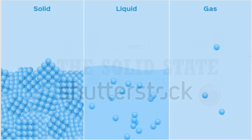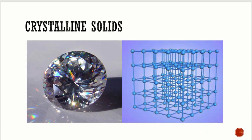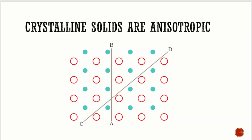Based on the arrangement of the constituent particles in them, solids are broadly classified into crystalline and amorphous solids. In crystalline solids, the constituent particles are arranged in a definite geometric pattern in all three dimensions. They have a long-range order, which means that knowing the arrangement at one site, the arrangement at another site can be predicted.